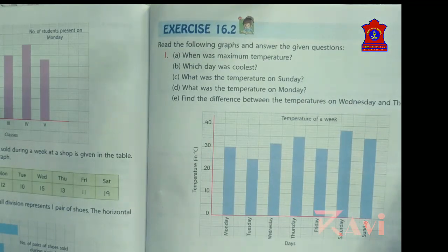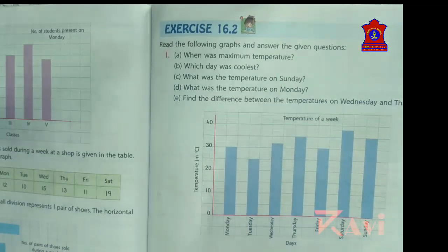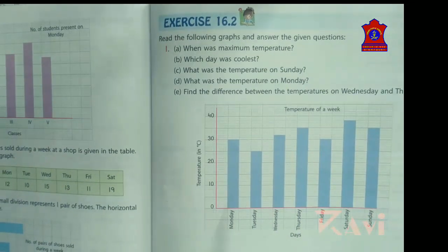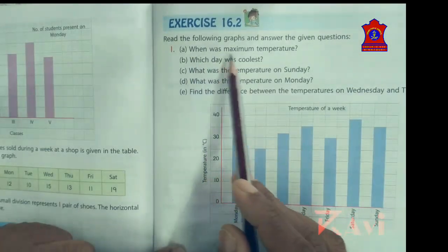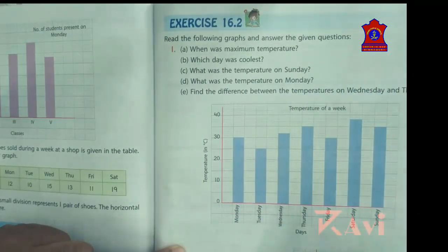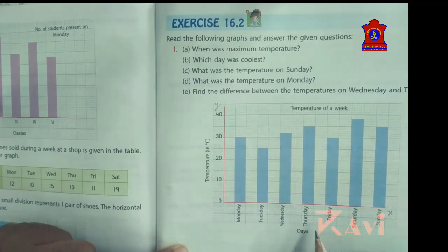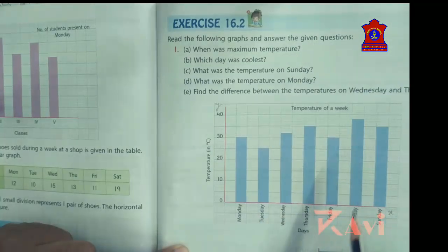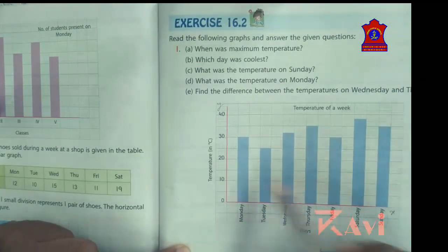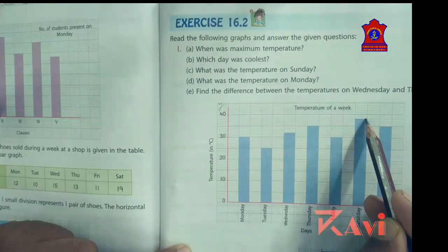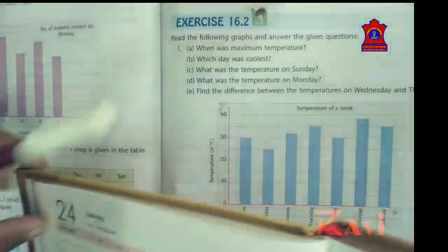Good morning dear students, today we shall start exercise 16.2 of chapter 16. Let's look at this graph. We have to read this graph and answer the following questions. The x-axis is showing days and the y-axis is showing temperature. The first question is: when was the maximum temperature? Looking at the graph carefully, Saturday is the maximum temperature — the maximum temperature recorded was on Saturday.